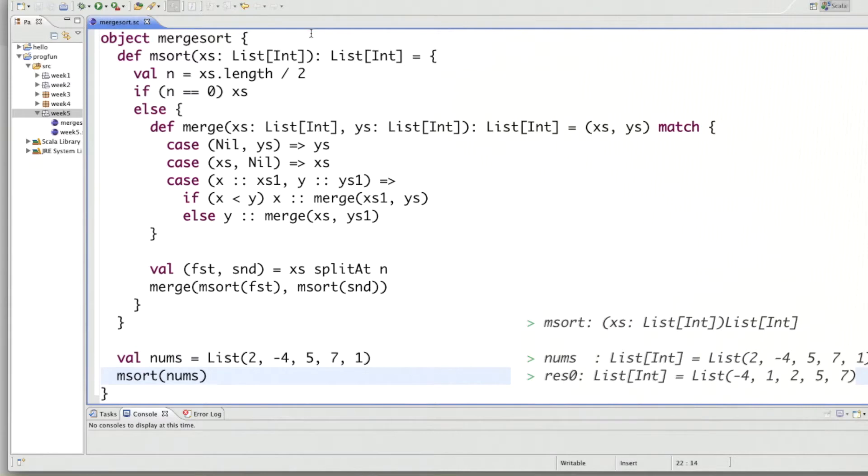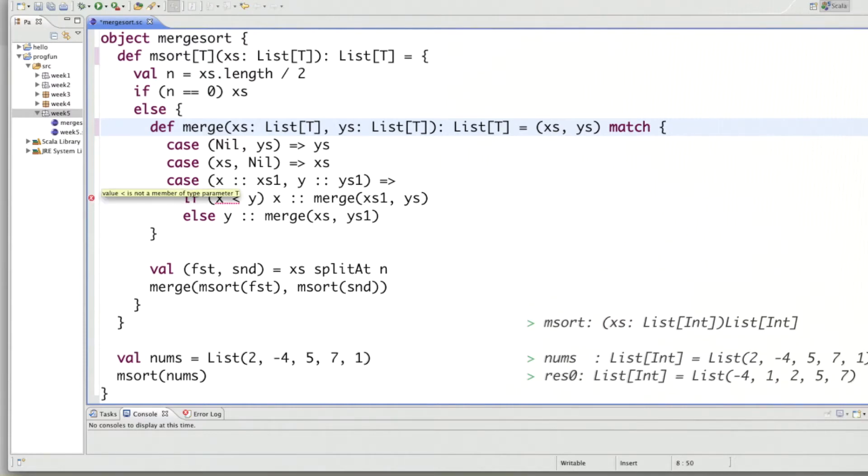Here I have the merge sort that we have defined at the end of the last session. Let's just replace the int by a t and make t a type parameter. And the same thing here for the merge which takes the type parameter of the enclosing function m sort. And what do we see? We see one error here which says that value less is not a member of type parameter t. Of course, now that our list elements can have an arbitrary type, we can no longer be sure that there is in fact a less than function defined on elements of this type. So, what can we do?